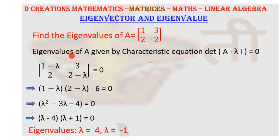The determinant is given in this manner. If you solve it, you are going to multiply these two terms, that means (1 minus lambda) into (2 minus lambda), minus of 3 into 2 is 6. When you try to simplify it further, you get it as lambda squared minus 3 lambda minus 4 is equal to 0.